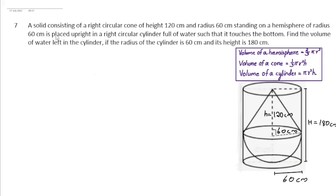Dear students, welcome to your maths guide. This is question number 7, exercise 13.2. A solid consisting of a right circular cone of height 120 cm and radius 60 cm standing on a hemisphere of radius 60 cm is placed upright in a right circular cylinder full of water such that it touches the bottom. Find the volume of water left in the cylinder if the radius of the cylinder is 60 cm and its height is 180 cm.